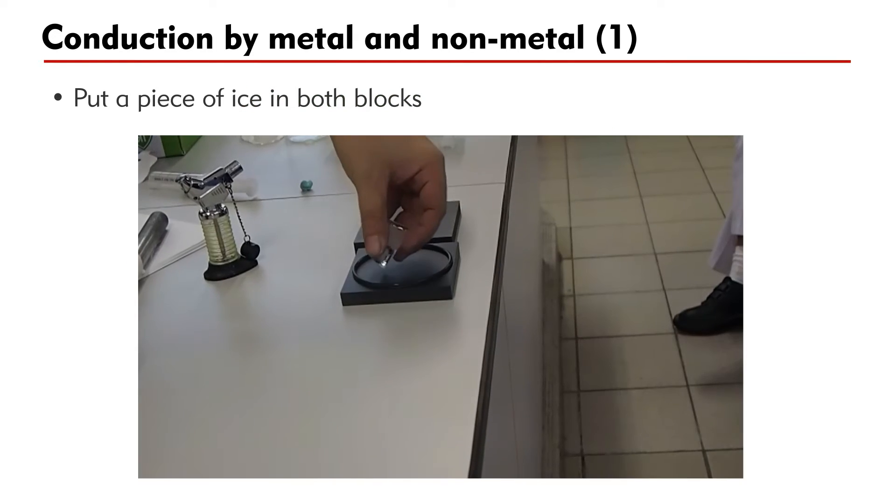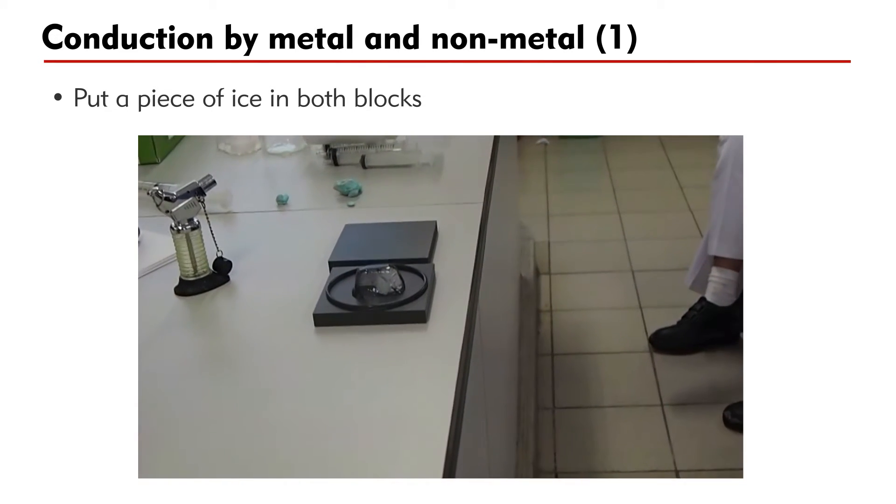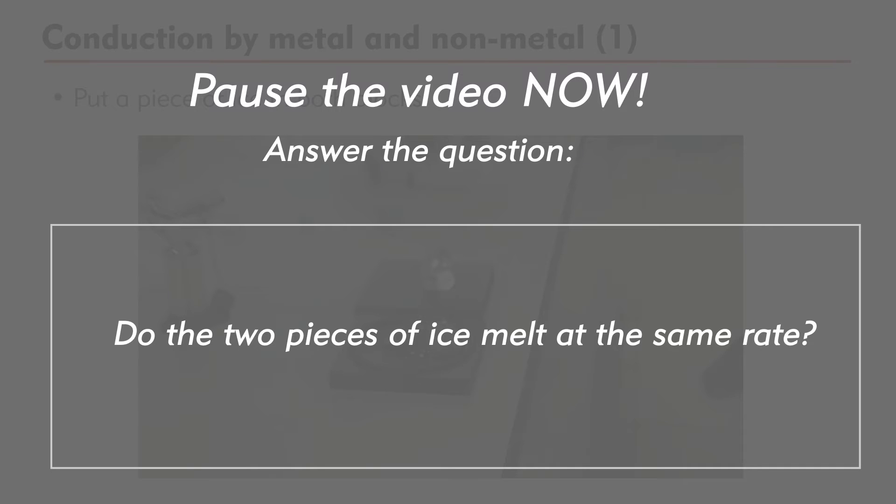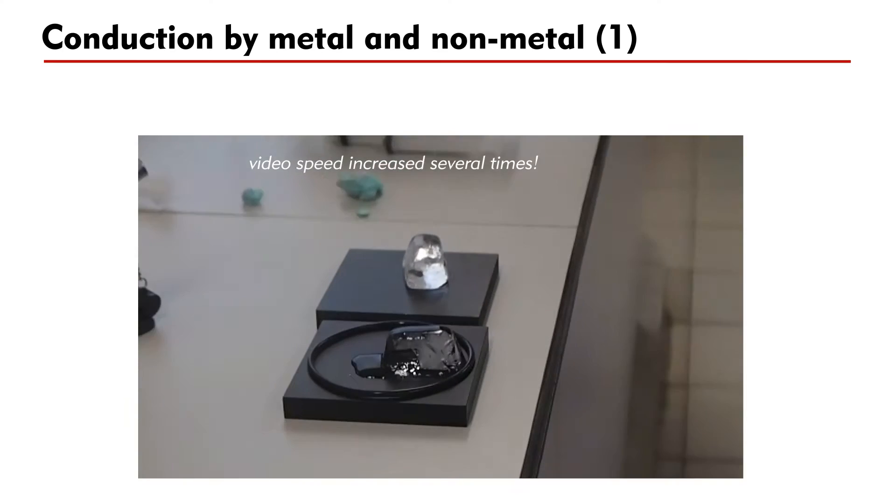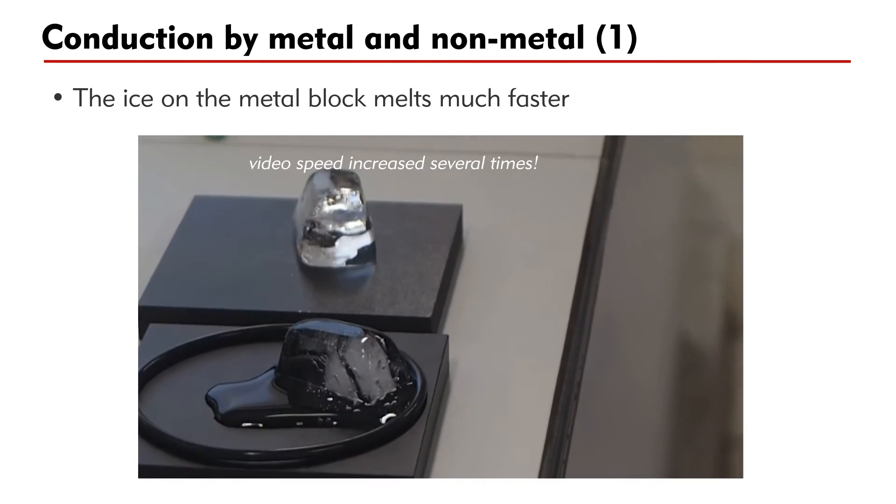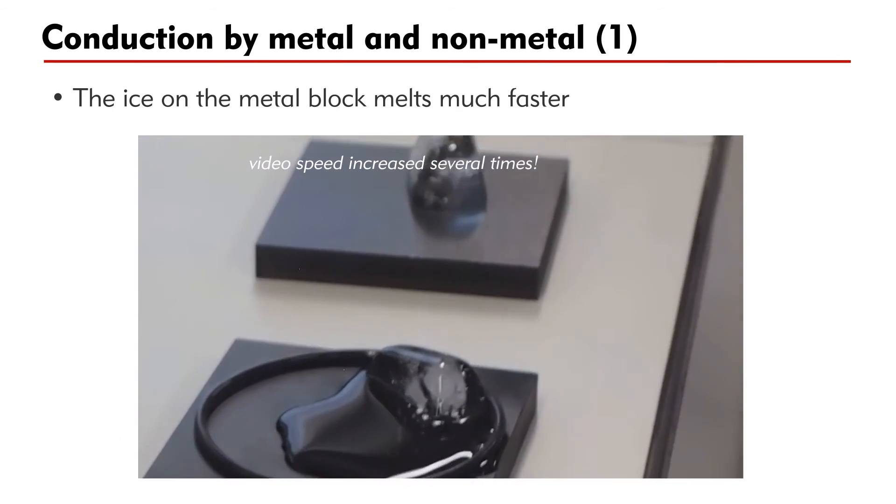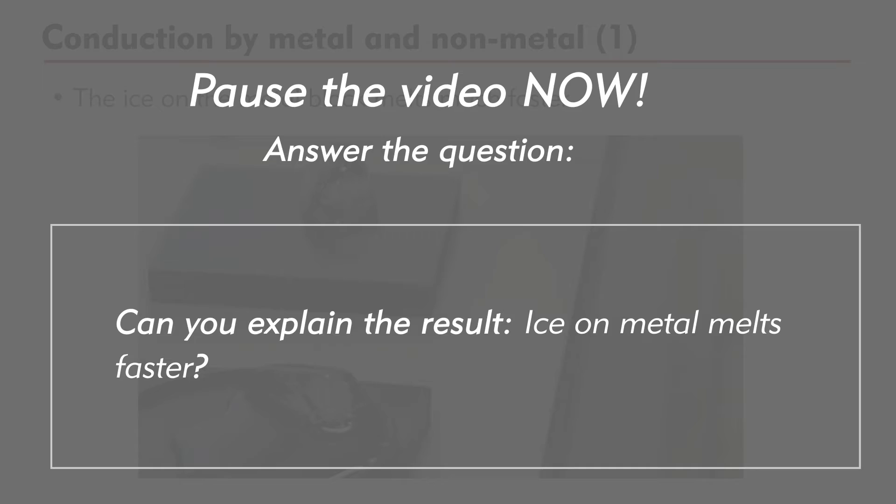Let's extend the experiment. A piece of ice is placed on each block. Do they melt at the same rate? Pause the video for a while and answer the question. Results show that the ice on the metal block melts much faster than the one on the wooden block. Can you explain the result?